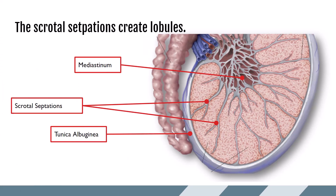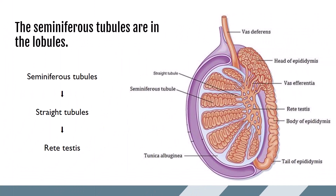The scrotal septations will create lobules. The lobules are not seen by ultrasound either, but they are home to important microscopic features of the testicle. There are about 250 to 400 lobules per testicle, and this is where spermatogenesis occurs. The seminiferous tubules are within the lobules, and they converge together to form the straight tubules. The straight tubules then extend toward the mediastinum, where they will converge into the rete testis.